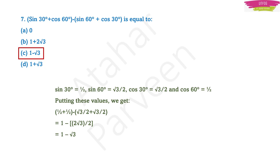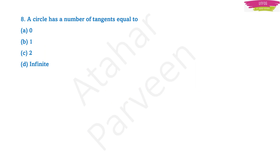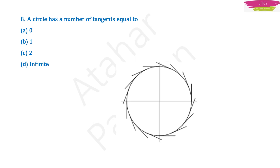If I have made a mistake, please write in the comment section. If both our answers match, then we are both going in the right direction. Next, question number 8: a circle has a number of tangents equal to — options are 0, 1, 2, or infinite. Imagine a circle with tangents — you can draw as many tangents as you want because they are infinite. A circle has infinite tangents; we can draw infinite tangents touching a circle.